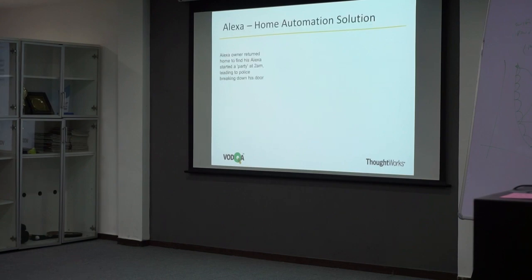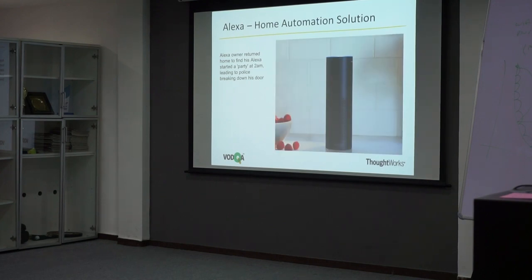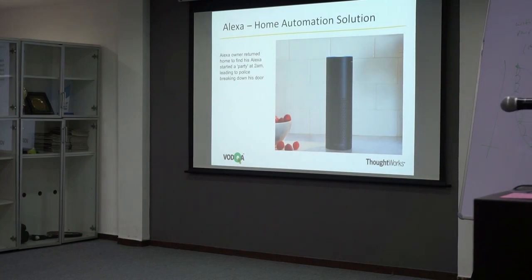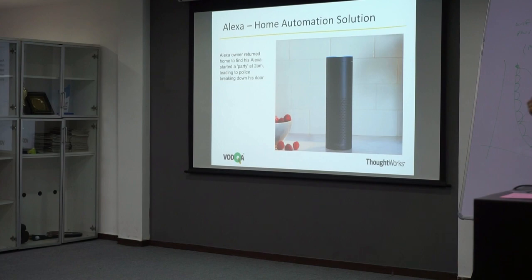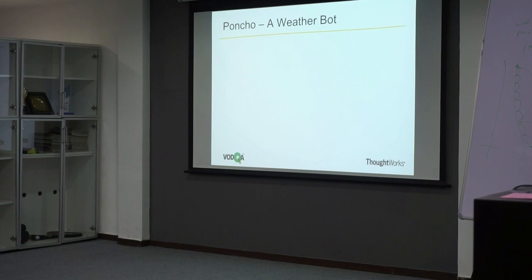Home automation: Alexa has done so many things. The classic one is that at 2 a.m. it started playing party songs when the owner was not at home. In the US, if you play songs at 2 a.m., you end up going to jail — and it actually took its owner to jail. He paid for going to jail.